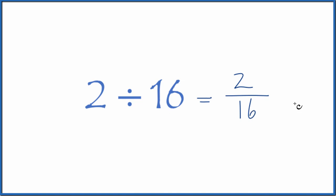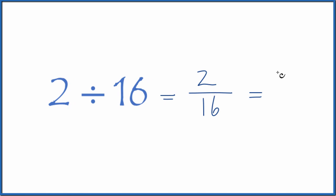We can even simplify that further because these are both even numbers. 2 divided by 2 is 1, 16 divided by 2 is 8. So 2 divided by 16 equals the fraction 2/16 or 1/8. These fractions are equivalent.